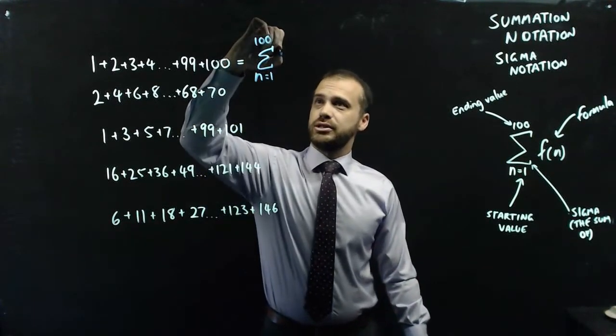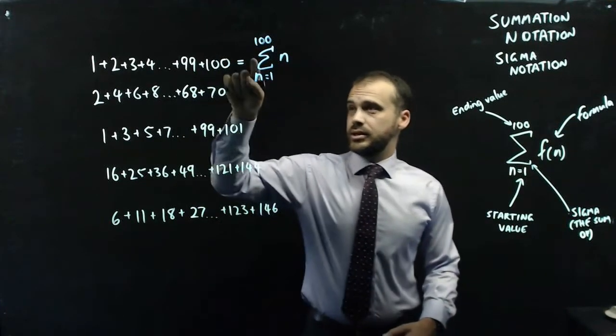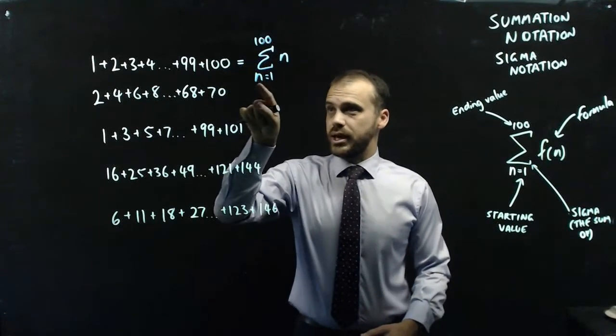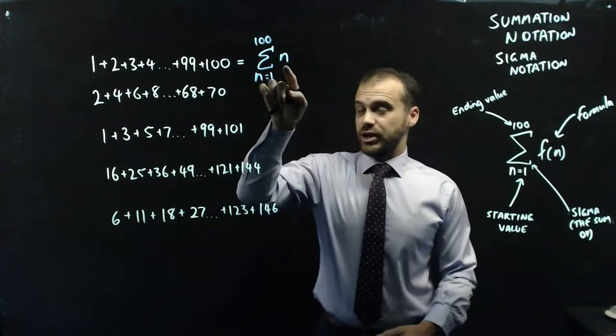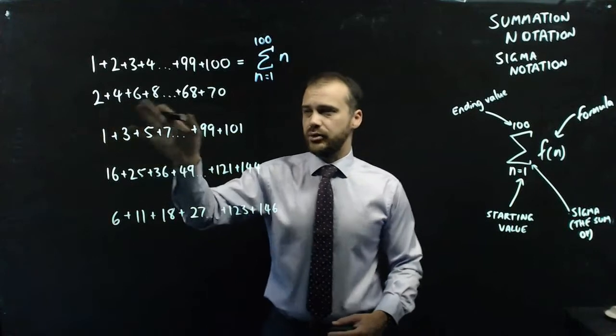Well, it turns out I just need to put it into n. So now, what does this say? It says the sum of all of the integers from n equals 1 to 100 when they're put into the function n. What about this next one here? How do we do that?